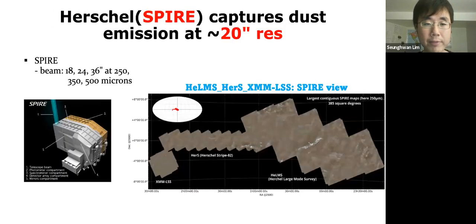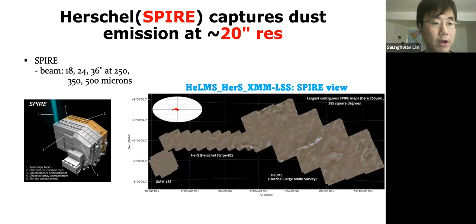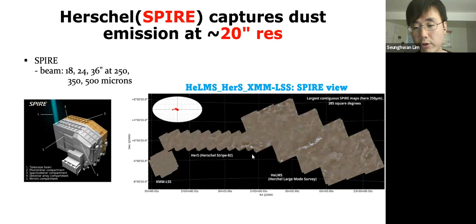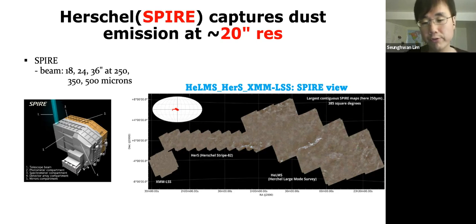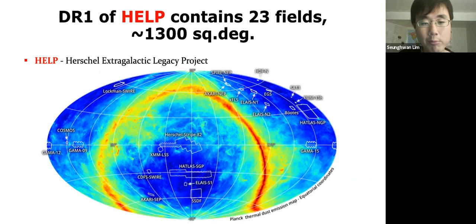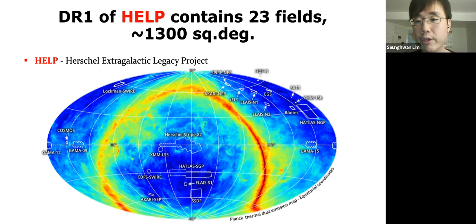For our data, we use the Herschel SPIRE map to trace dust emission in the sub-millimeter. The SPIRE beam sizes range between 18 and 36 arcseconds. The image on the right shows the most contiguous SPIRE map, a combination of three individual neighboring fields at the equator, with a couple of large bright galactic cirrus structures visible. We use the HELP — Herschel Extragalactic Legacy Project — which organized Herschel data to provide the best products for a total of 23 primary Herschel fields.